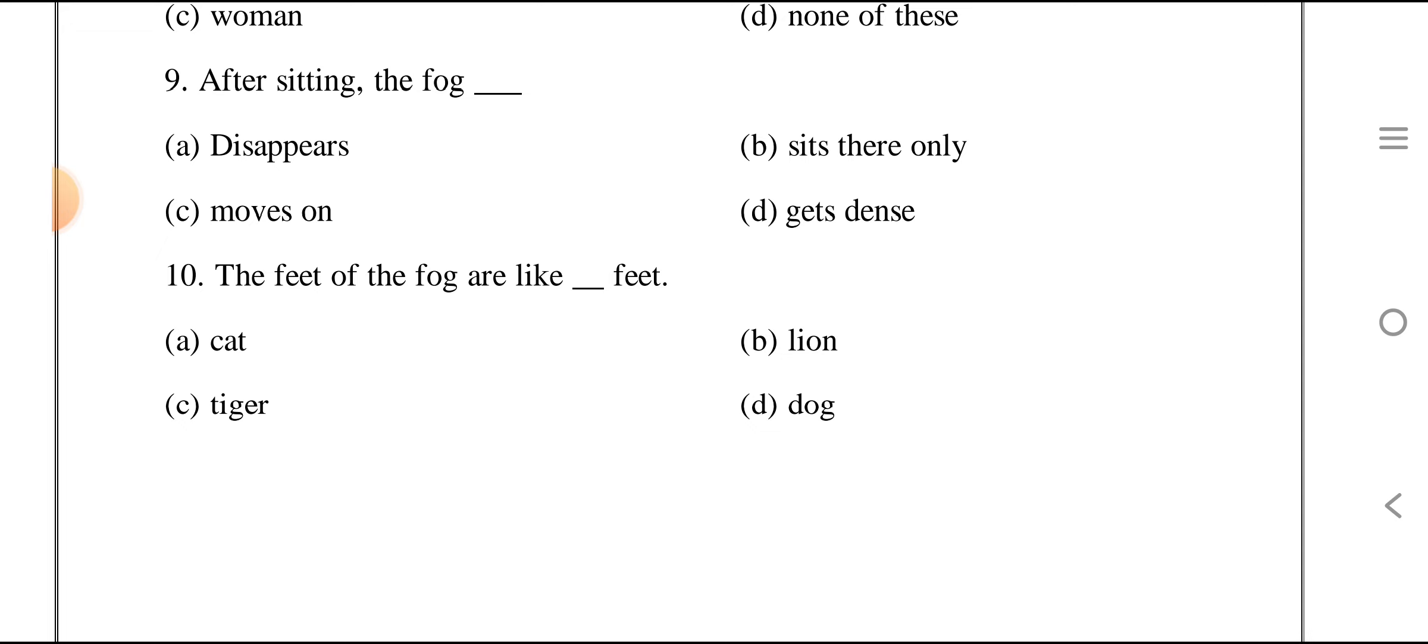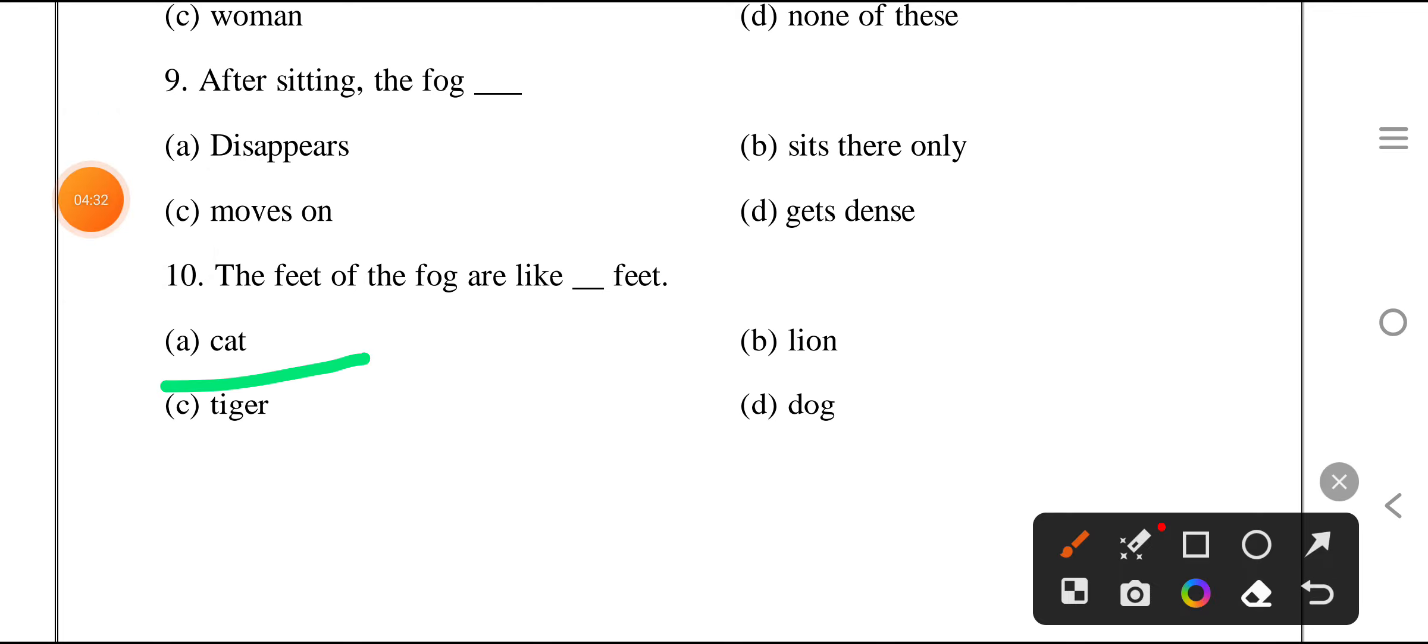The feet of the fog are like the cat. Why is it compared to cat? The feet of the cat are so soft. As long as the feet of the cat move, we do not know that the cat is inside the house. This is why the fog is compared to cat. The fog does not know when and when it comes to the city.